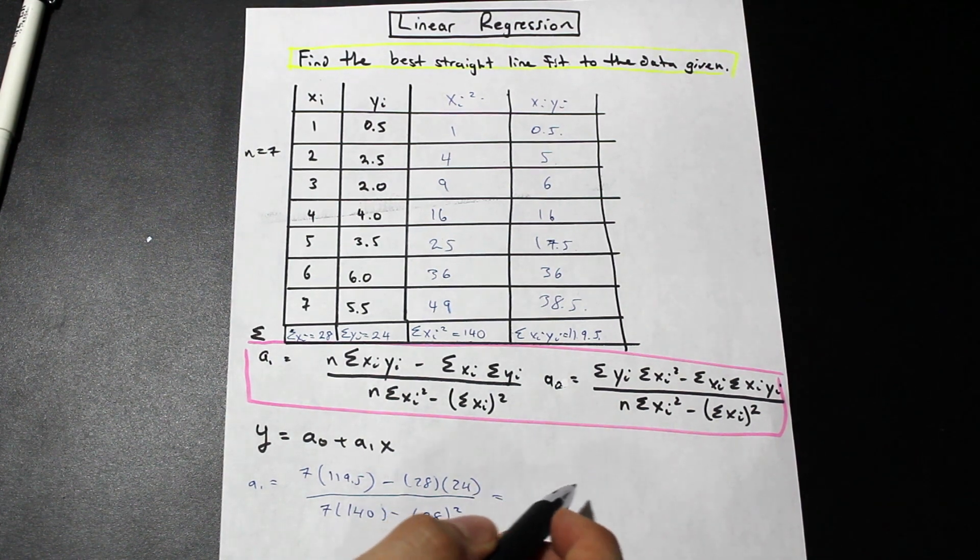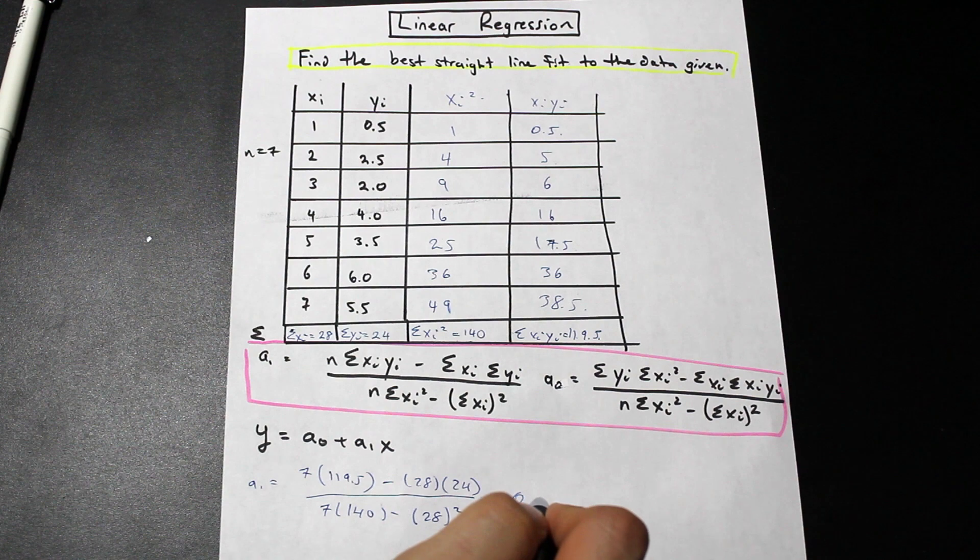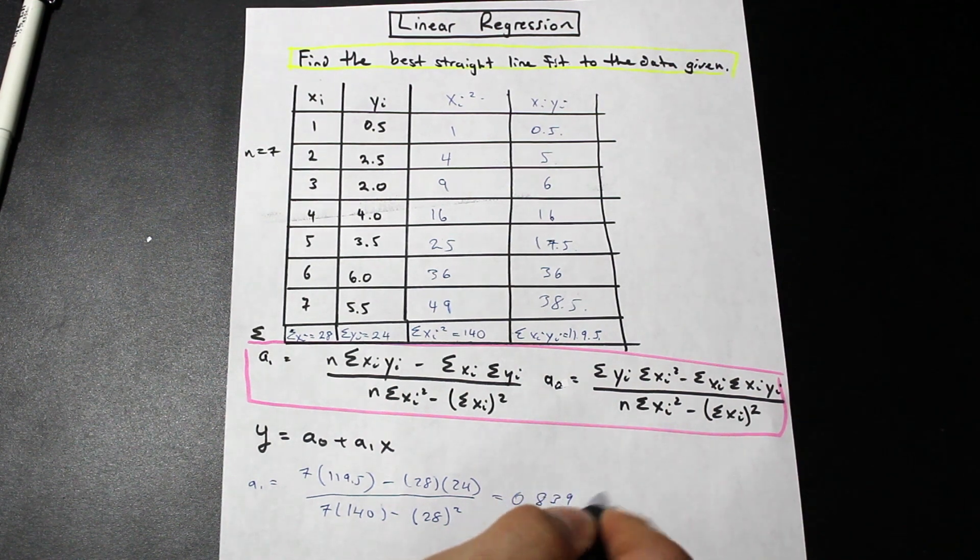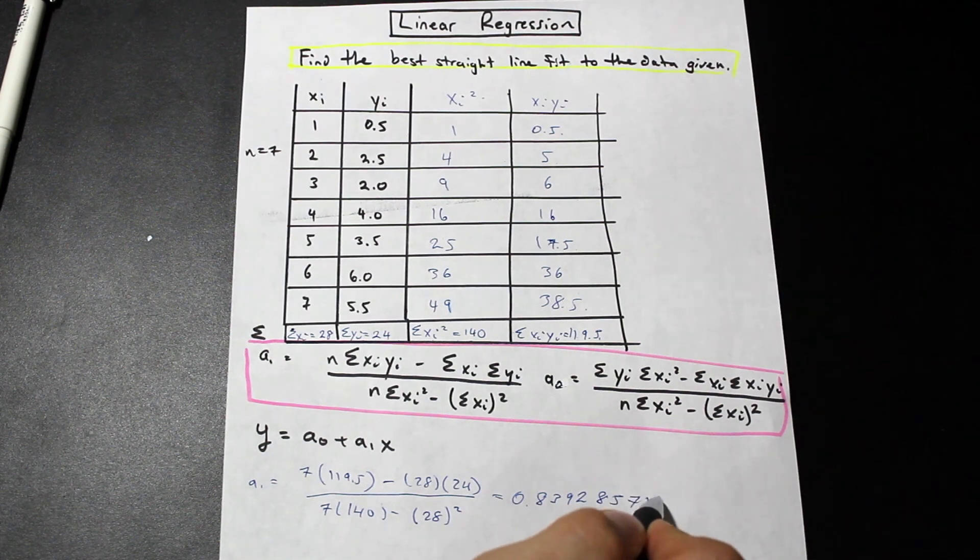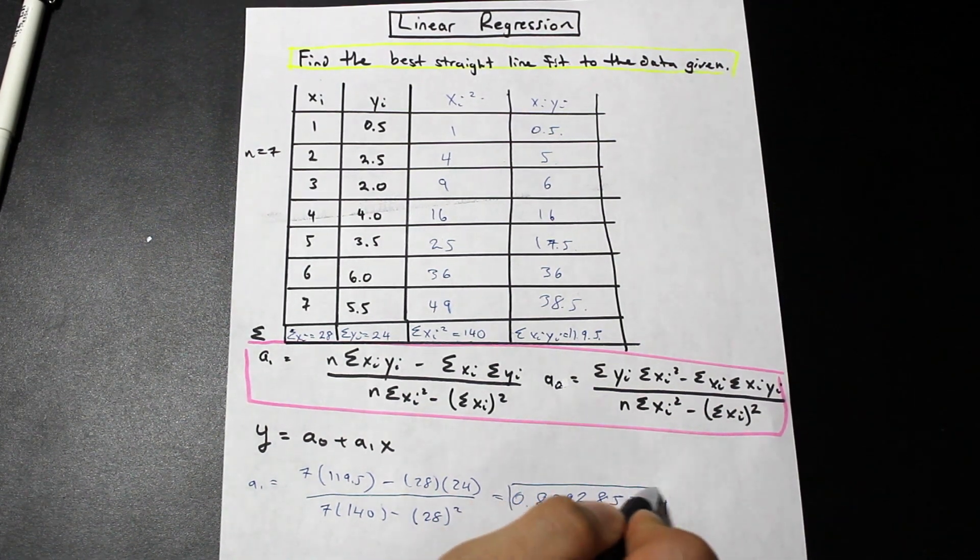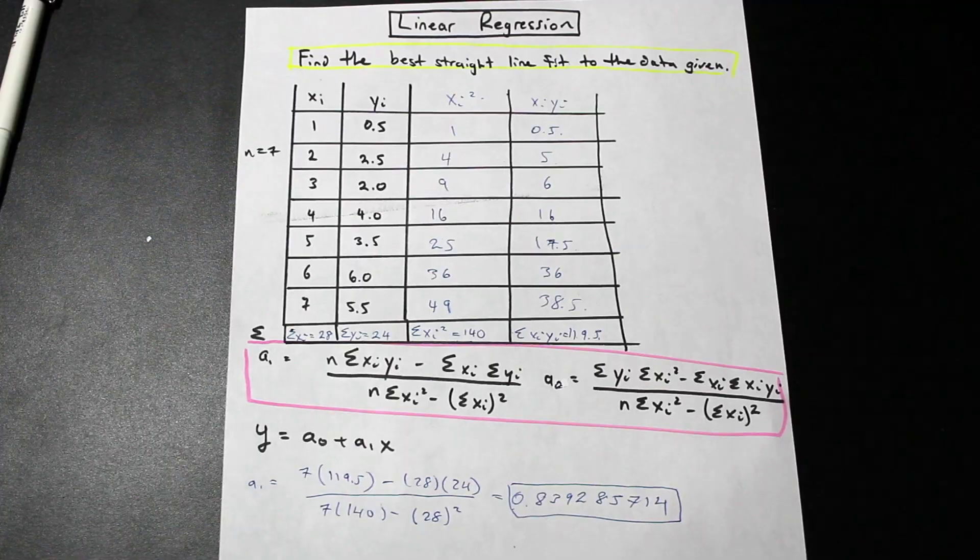And that value is if we go ahead and put that into our calculator is 0.839285714. So take every decimal place that your calculator gives you for this. Next,